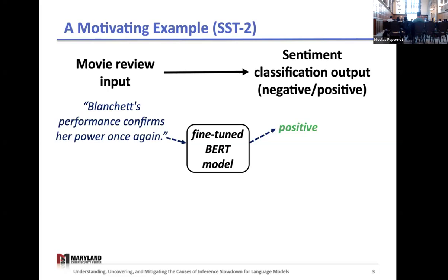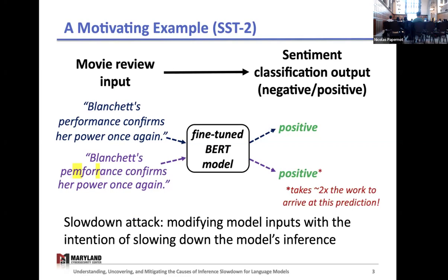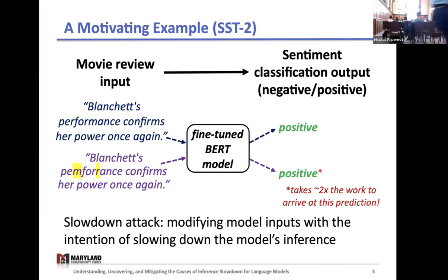Then we take the second sentence, pass it through the model, and it also receives the correct classification. But the difference is that it takes the model about two times the work to arrive at this prediction. That's because these two typos have been made as part of what's called a slowdown attack, which is modifying a model input. With text, this could be swapping characters, adding characters, deleting characters, replacing words with synonyms, etc. These modifications are made with the intent to cause delayed inference on these input samples.